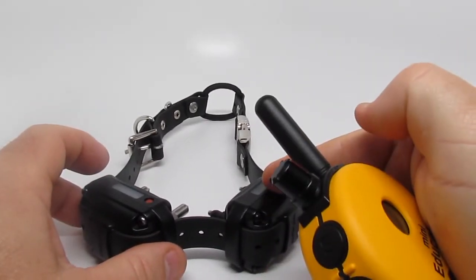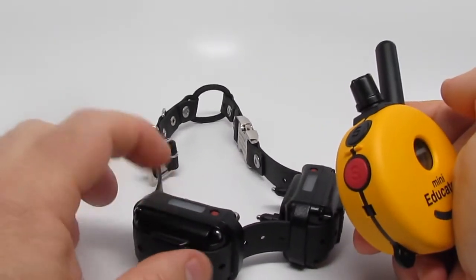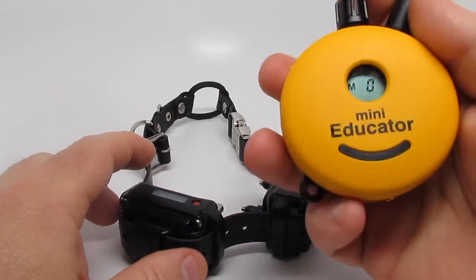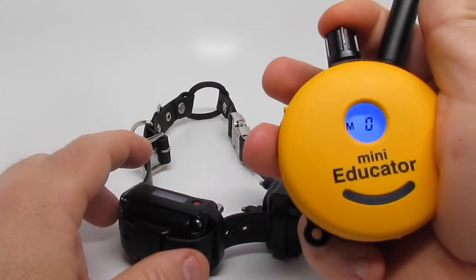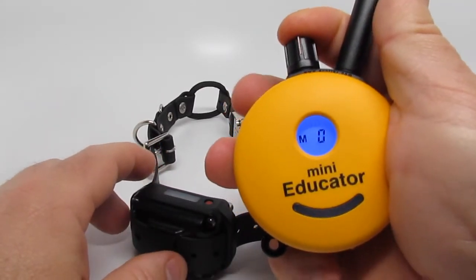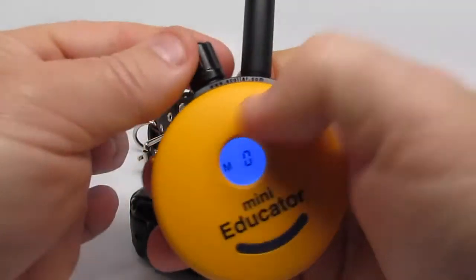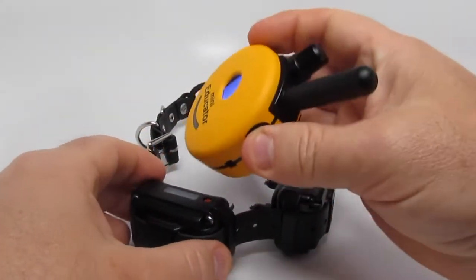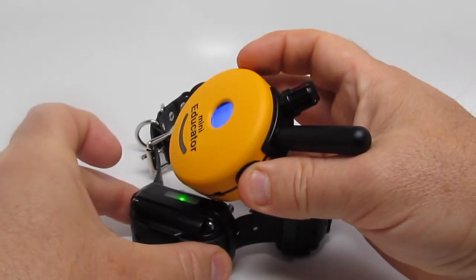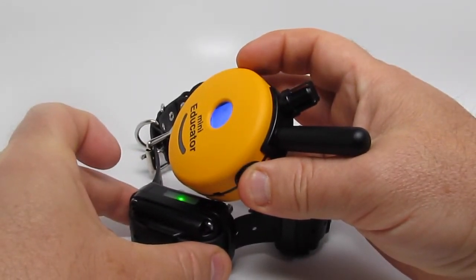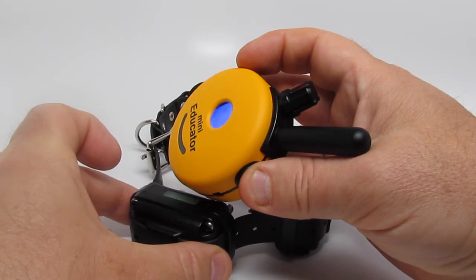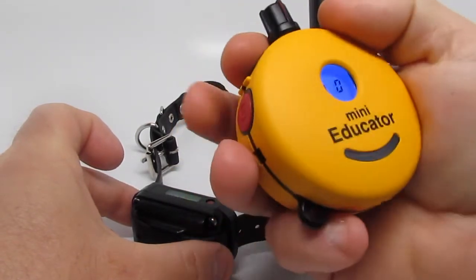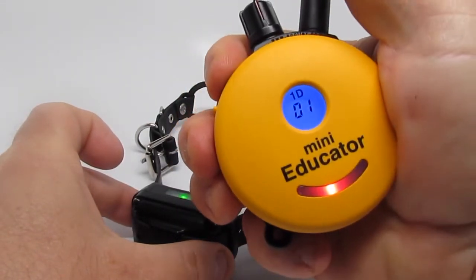So, we have one dog paired up. We're going to do the same thing to pair up the second collar. So, we're going to unlock it. Get flashing one dog. Make sure the reset dial is at zero. We're going to put the magnetic switch on. Wait five seconds. It's flashing. Red button. Black button. Paired.